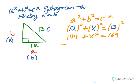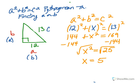The next thing we want to do is subtract 144 from both sides. When we do that, we get X squared equals 25. By taking the square root of both sides, we get X is equal to 5. Therefore, the missing side is 5.